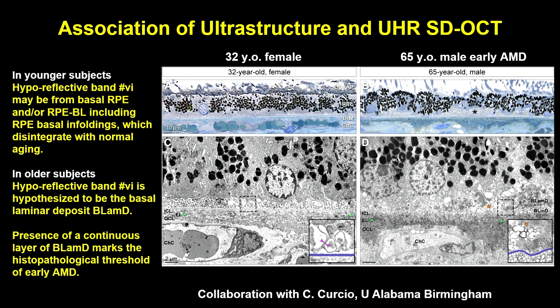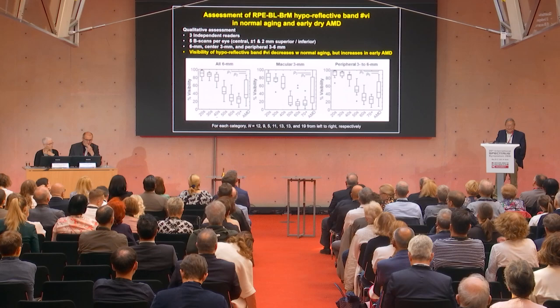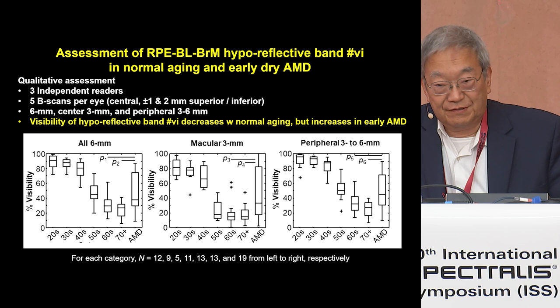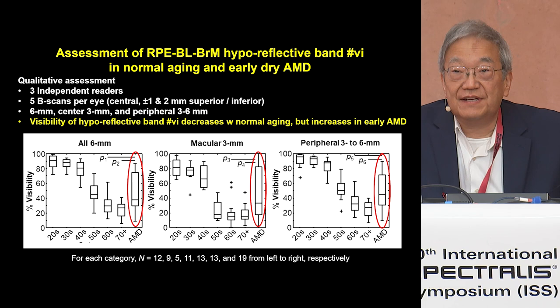We believe this feature has two different origins. In younger subjects, the hyper-reflective band is due to the basal infoldings, which disintegrate with normal aging. In older subjects, we hypothesize that this is due to the basal laminar deposit, and the presence of this deposit is the histological marker for AMD. By quantifying the visibility of this feature — in this case by human readers — we see decreasing visibility with normal aging, but an increase in the appearance of the hyper-reflective band in early and intermediate AMD subjects.